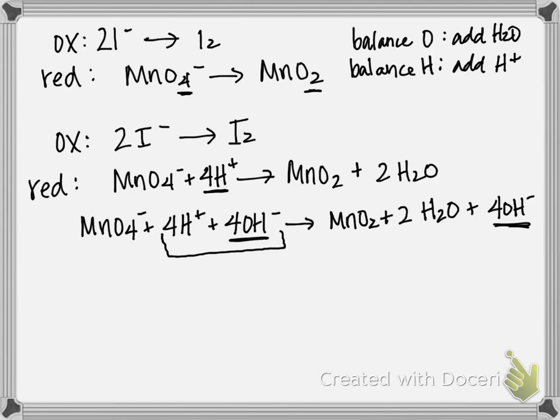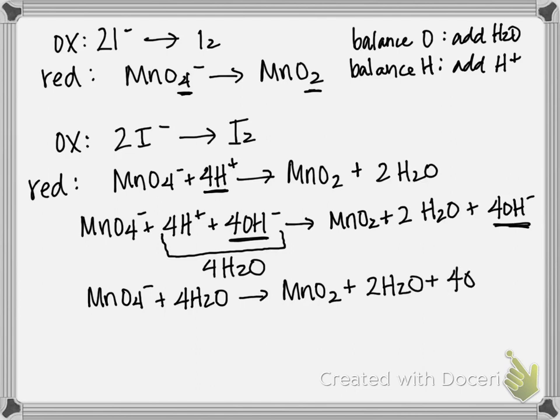H+ plus OH gives you H2O. And if we have 4 of each, it's going to make 4 H2O. So therefore our half reaction would become MnO4 minus plus 4 H2O gives you MnO2 plus 2 H2O plus 4 OH minus.